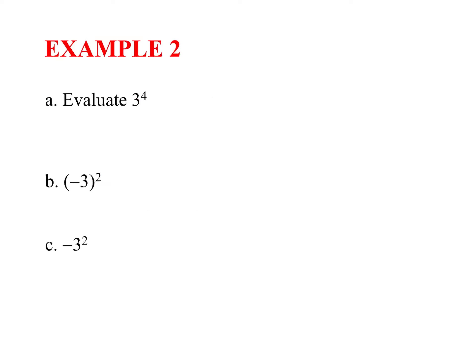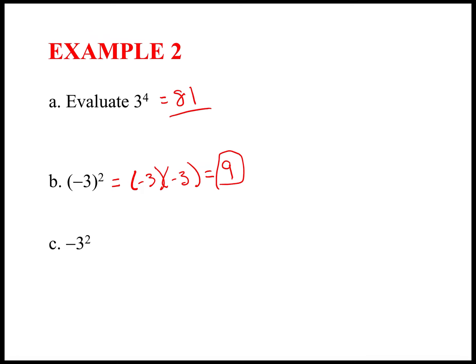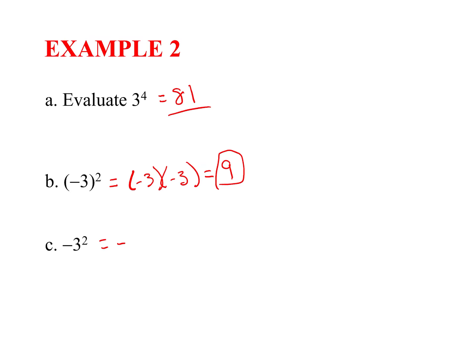We will also evaluate exponents instead of just writing them — use your calculator. For part A, put in three to the fourth power: 81. For part B, put the parentheses in your calculator. Negative three squared is the same as negative three times negative three, which is positive nine. Down here, only the three is squared, so it's negative three squared — that gives us negative nine.